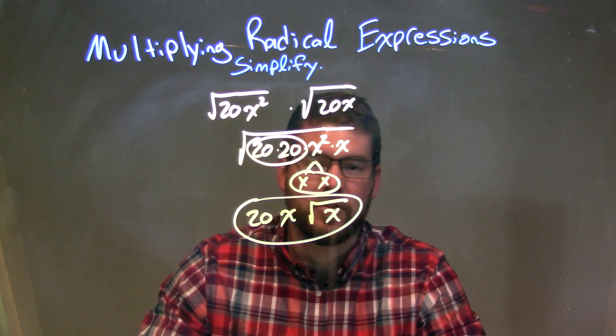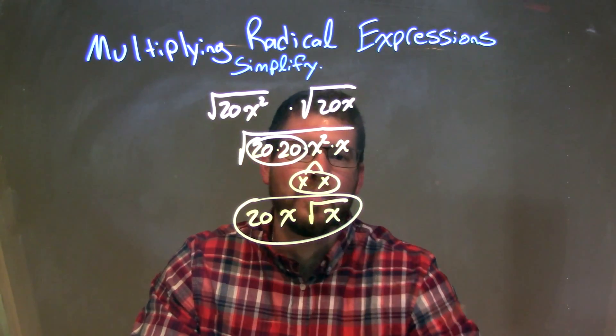So, again, our final answer here is just 20x times the square root of x.